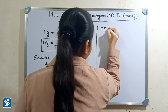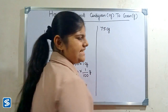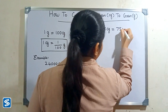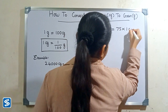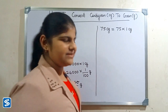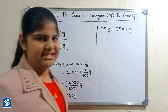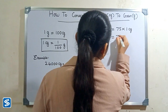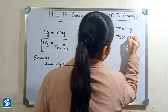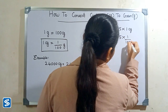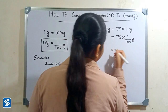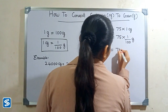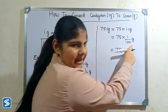Next we will take another example: 75 centigrams. 75 centigrams can be written as 75 multiply one centigram. Now we have to substitute one by 100 grams in the place of one centigram, so 75 multiply one by 100 grams. 75 multiply one will be 75, so 75 by 100 grams.